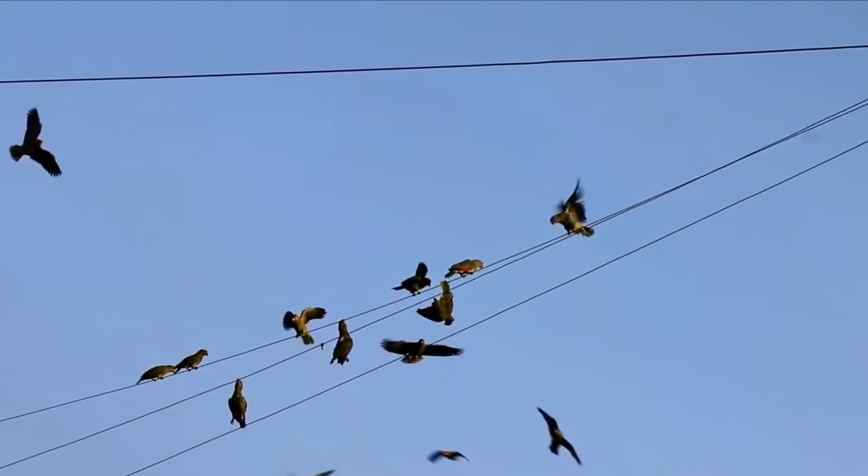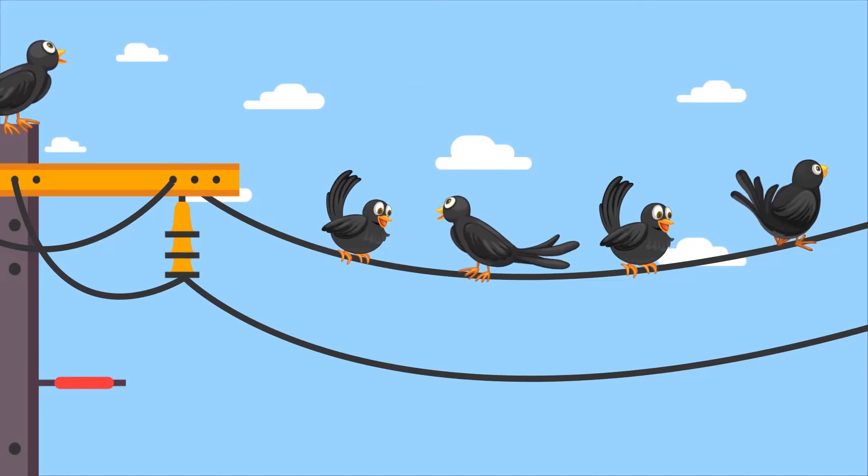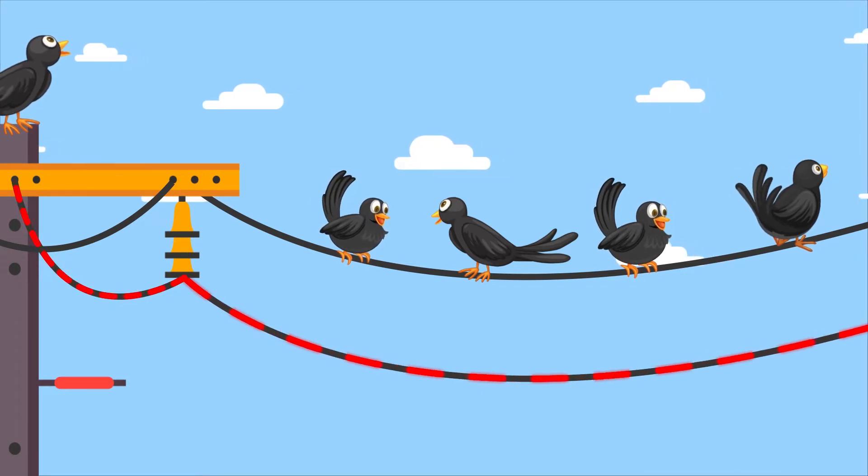If the birds aren't getting electrocuted, it essentially means that they are not getting electrical shocks, meaning the bird isn't allowing the electricity to flow through the wire into their own body. But why does that happen? To understand that, let's learn a little about the nature of electricity.